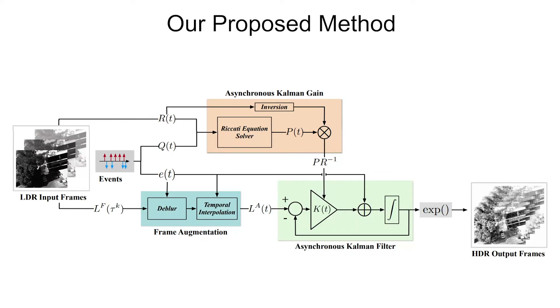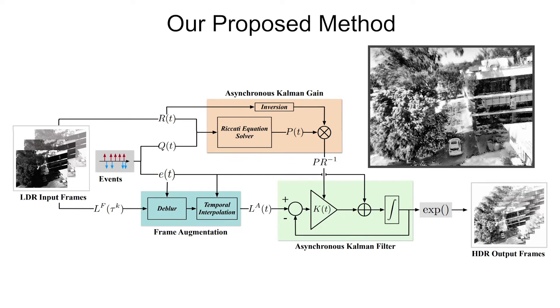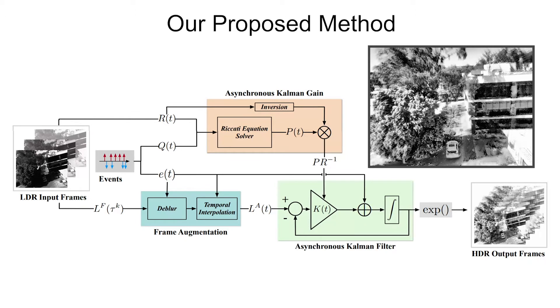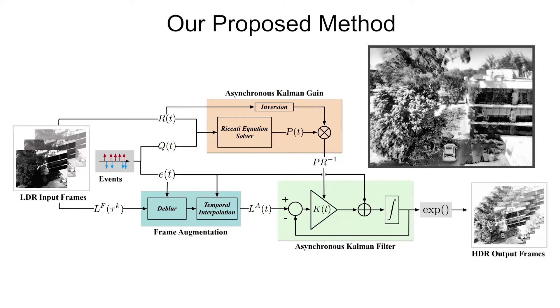The internal filter states, including the Kalman gain and the output image state, are updated asynchronously with every event. The final output is a high dynamic range video that can be sampled at virtually any frame rate.